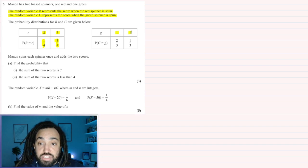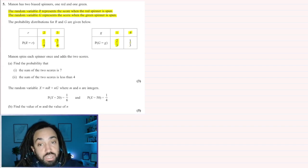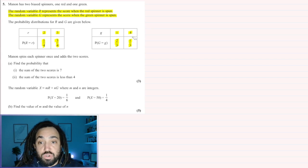For the green spinner, there are two outcomes, 1 and 4. The chance of getting a 1 is two thirds, the chance of getting a 4 is one third.